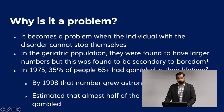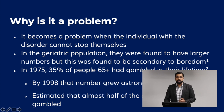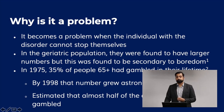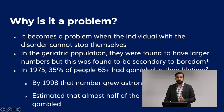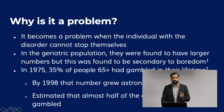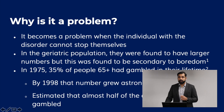Why is it a problem? It becomes a problem when the individual with the disorder cannot stop themselves. In the geriatric population, they were found to have larger numbers, but this was found to be secondary to boredom. In 1975, 35% of people 65 and older had gambled in their lifetime. By 1998, that number grew astronomically to 80%. Now it's estimated that almost half of adults, by the time they are 65, have gambled.